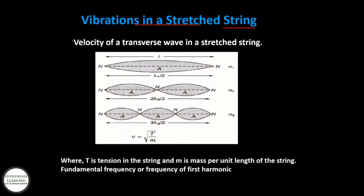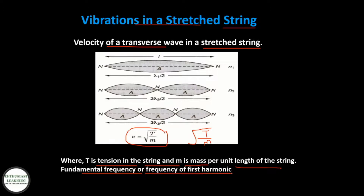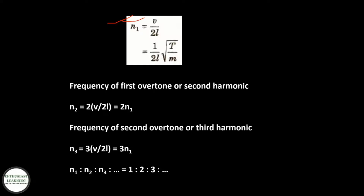Vibrations in a stretched string: velocity of transverse waves in a stretched string is V = √(T/M), where T is the tension in the string and M is the mass per unit length. Fundamental frequency, or frequency of the first harmonic, is n1 = V/(2L) = (1/(2L))√(T/M).